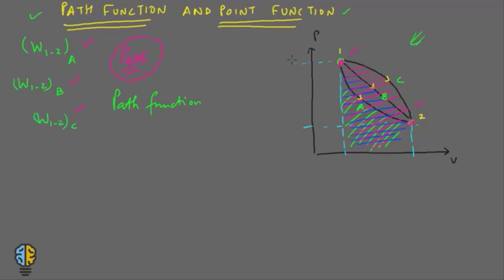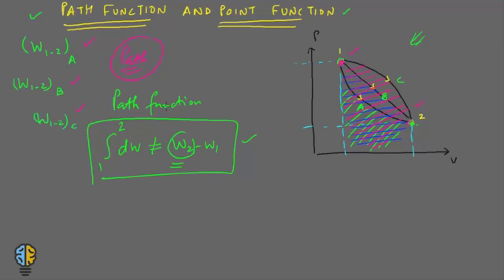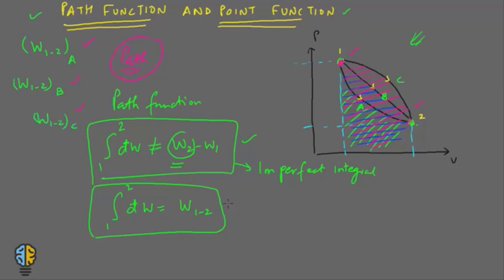Due to this, the mathematical integral going from 1 to 2 of dW is not equal to W2 minus W1. That would imply work has a definite value at a particular state, which it does not — you cannot find out the work at a particular point, making W2 minus W1 an invalid quantity. So you put a bar on top of dW, and this is called an imperfect integral. This imperfect integral equals the work from 1 to 2, and that is how you represent it.